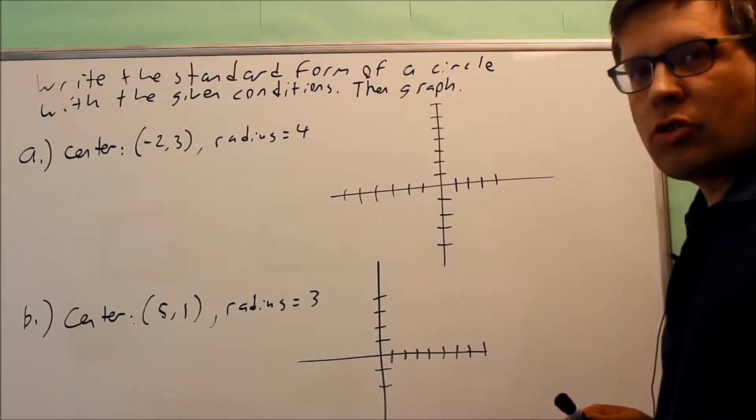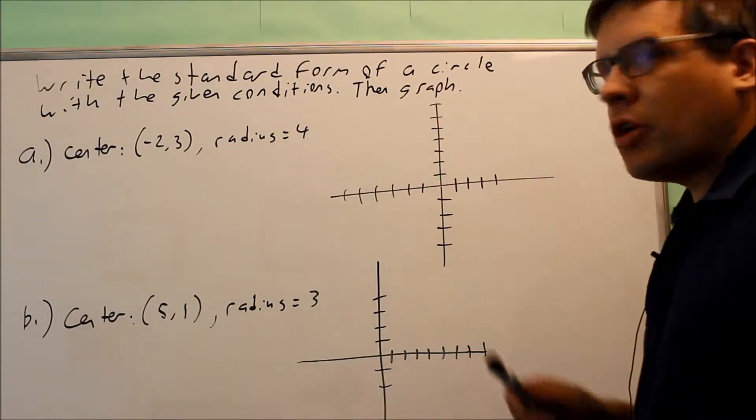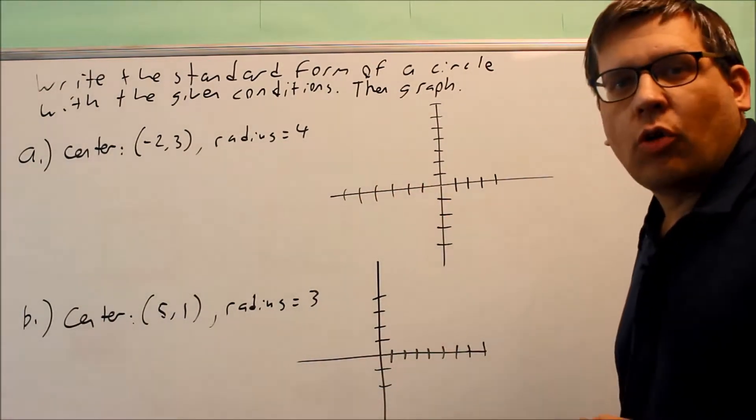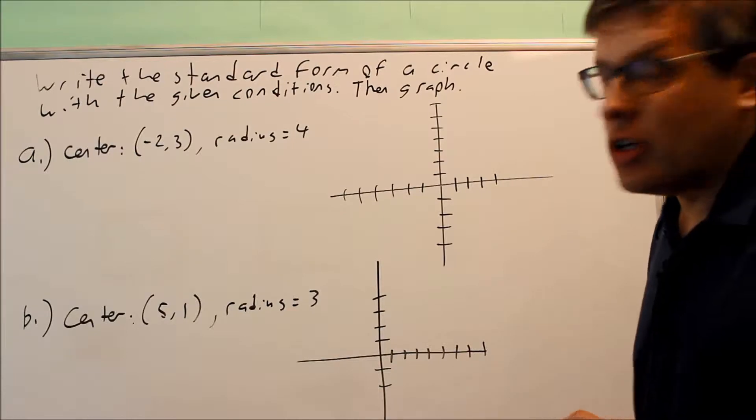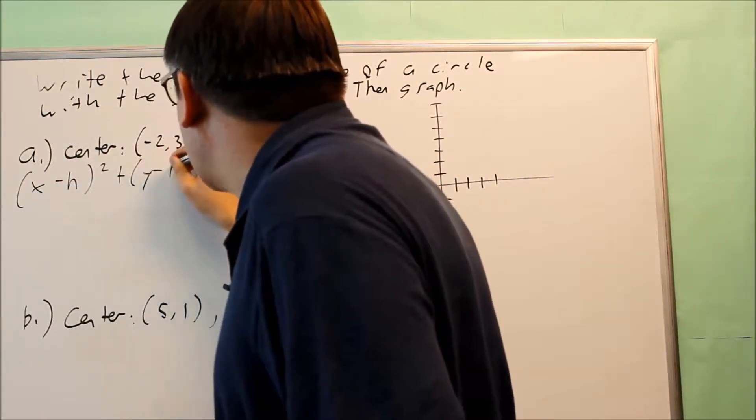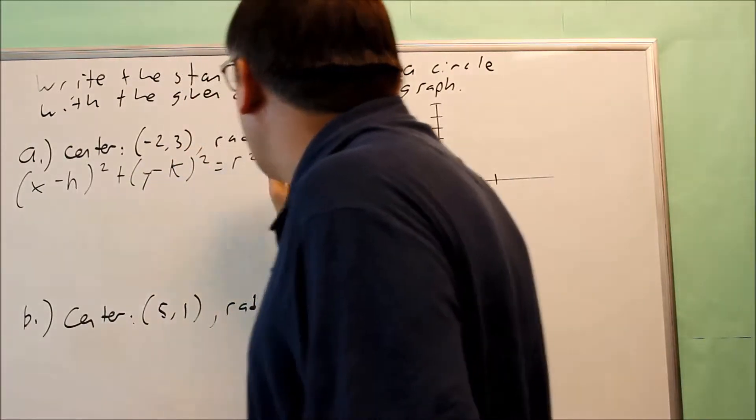We want to write the standard form of a circle with the given conditions, and then we also want to graph the circle. In order to do this, we first have to know what the standard form equation of a circle is. That is (x - h)² + (y - k)² = r².